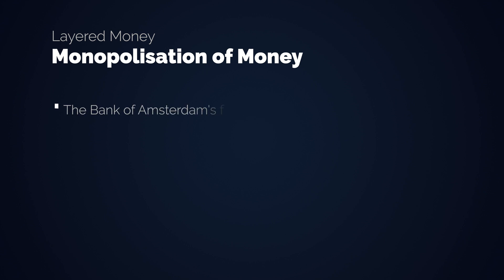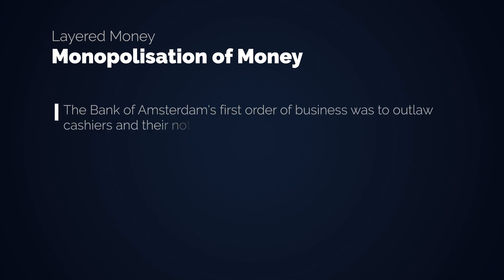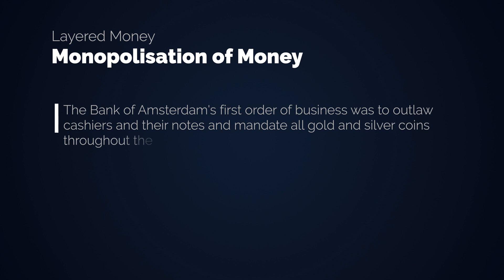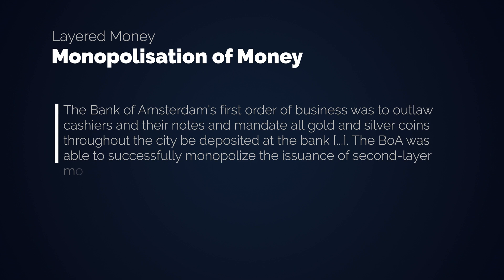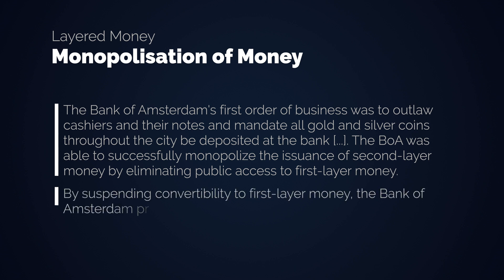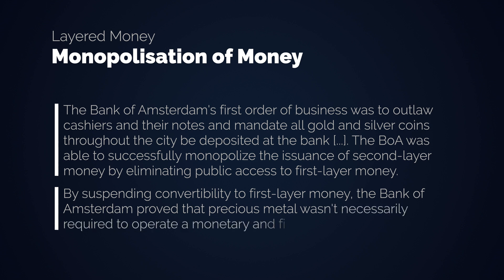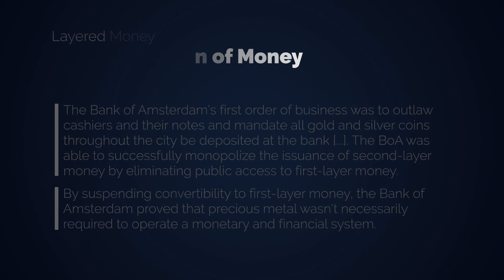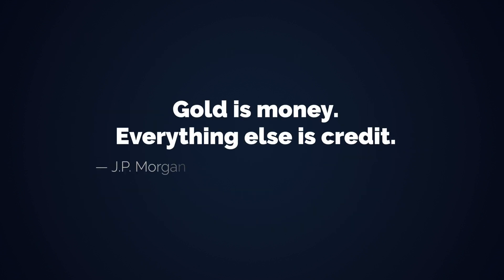In 1609 for example, the Bank of Amsterdam's first order of business was to outlaw cashiers and their notes and mandate all gold and silver coins throughout the city be deposited at the bank. The Bank of Amsterdam was able to successfully monopolize the issuance of second layer money by eliminating public access to the first layer money. By suspending convertibility to first layer money, the Bank of Amsterdam proved that precious metals wasn't necessarily required to operate a monetary and financial system. But one thing became clear later on: gold is money, everything else is credit. JP Morgan to United States Congress in 1912.